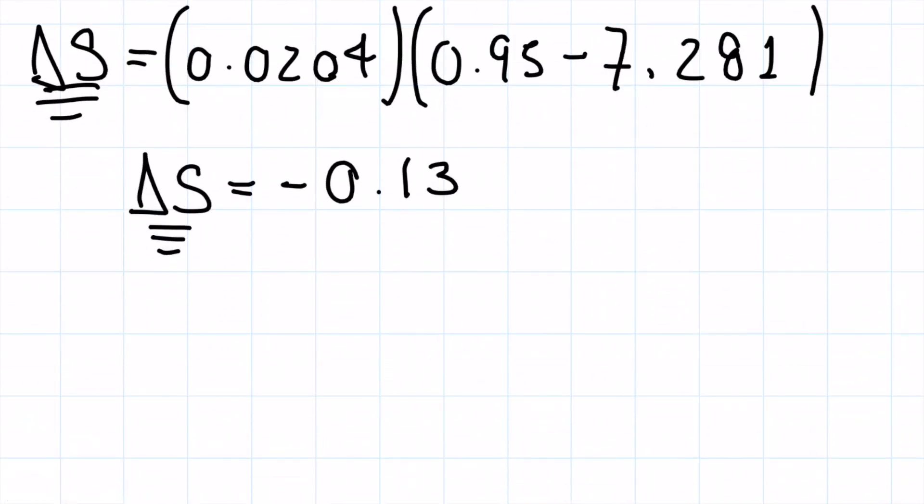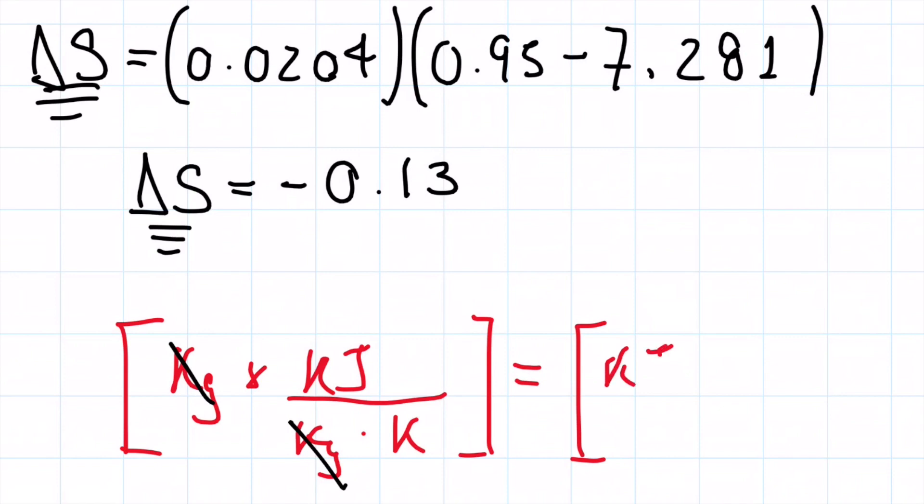Just for the units before we finish off, we're multiplying kilograms times kilojoules per kilograms per Kelvin. There's no temperature here involved, so that Kelvin is just going to stay there, right? So we get rid of the kilograms, and this turns out to be just kilojoules per Kelvin. And then if we wanted to get rid of that Kelvin there, we would need to know the temperature of the environment.